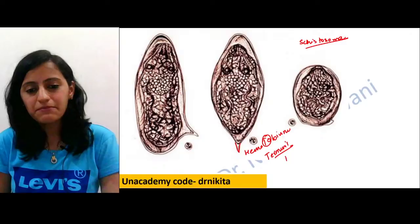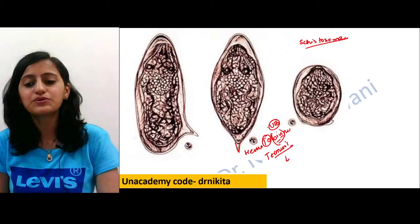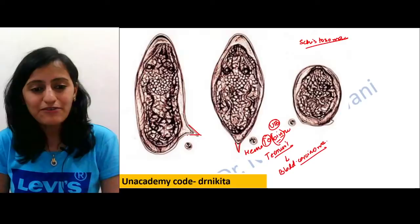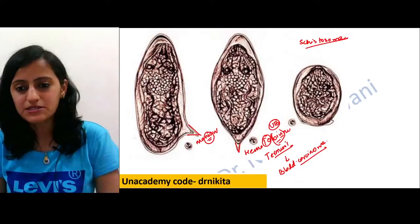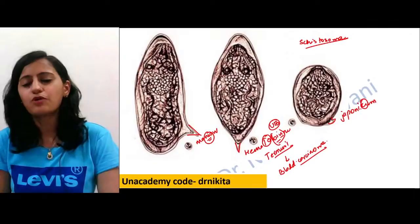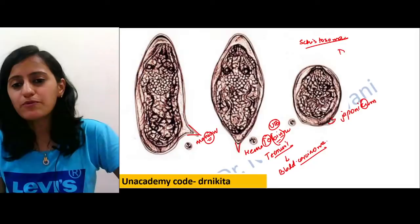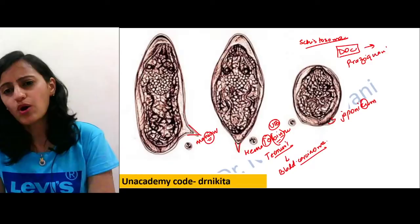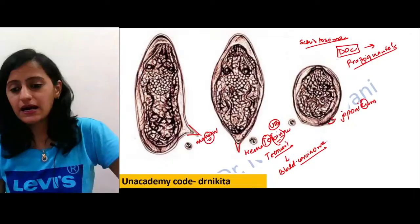Schistosoma haematobium stays in the urinary bladder — the vesical venous plexus — and can lead to bladder carcinoma. Schistosoma mansoni has a lateral spine. Schistosoma japonicum has a lateral knob. The drug of choice for schistosoma, and generally for cestodes and trematodes, is praziquantel.